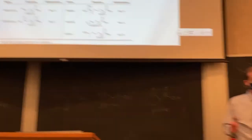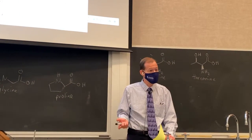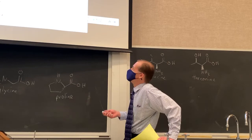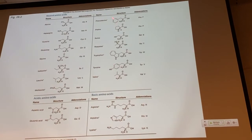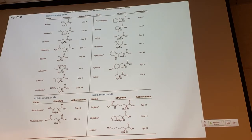Memorizing 20 structures is not as daunting as it seems because many are related to each other. For example, alanine and phenylalanine are closely related — you simply add a phenyl group to alanine. Aspartic acid and asparagine are also related — asparagine is simply the primary amide derived from aspartic acid. In the same way, glutamine is the primary amide derived from glutamic acid.